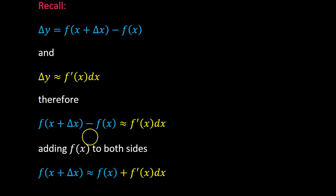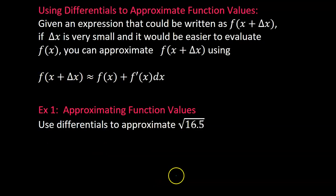If we add f of x to both sides, then we get this new formula: f at x plus delta x is approximately equal to f of x plus f prime of x dx. We can use this new formula to approximate function values.